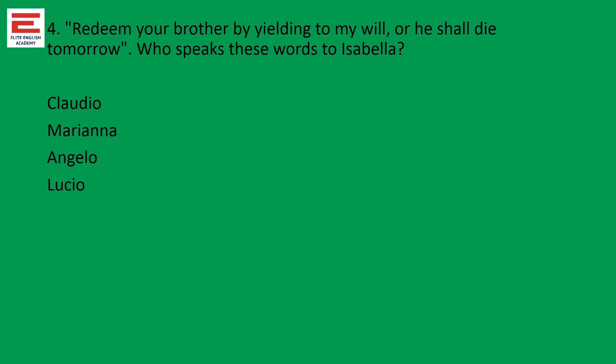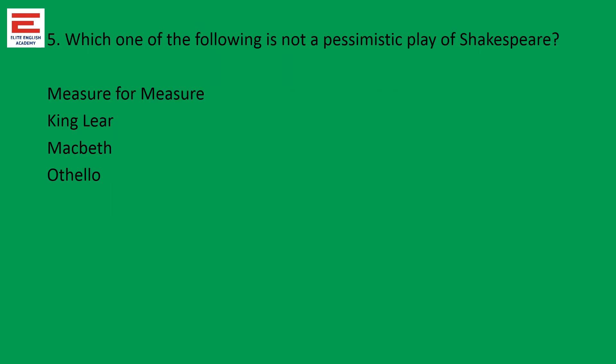Isabella is a character in Measure for Measure. Then Angelo, the Duke in charge, is talking in the next question. Question five: which one of the following is not a pessimistic play of Shakespeare? If you know the meaning of pessimistic — optimistic means positive, pessimistic means negative — King Lear is dying at the end because of old age and indecision; Macbeth is murdered; Othello commits suicide. The only possible reconciliation is Measure for Measure. The answer — which is not the pessimistic play — is Measure for Measure. When you find a question with 'not,' please be careful because our mind generally will not register negative statements.